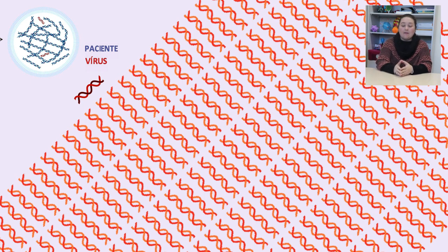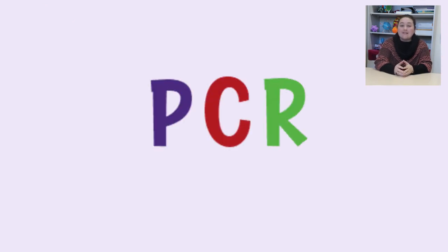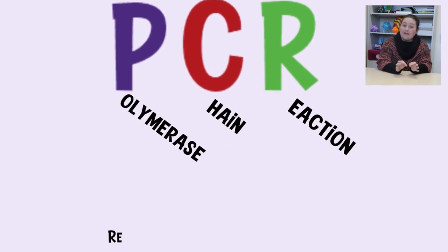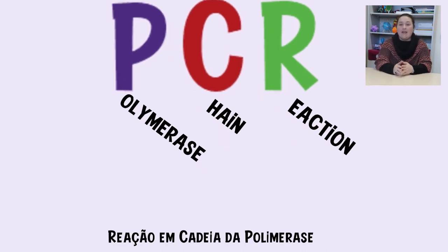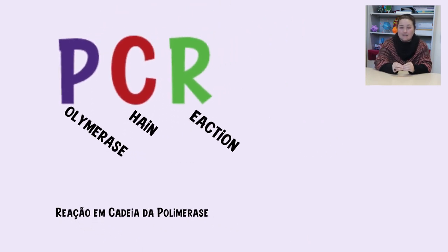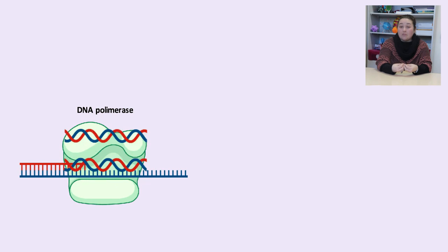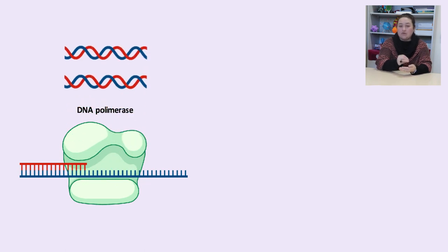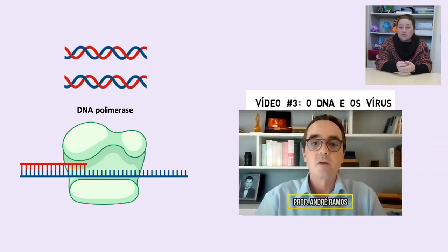A etapa que permite gerar as cópias de DNA é chamada de PCR. Esse nome é uma sigla que vem do inglês, Polymerase Chain Reaction, e que trazido para o português, se torna a reação em cadeia da polimerase, PCR. O método tem como enzima-chave a DNA polimerase, cuja função nos organismos é fazer a replicação do DNA.